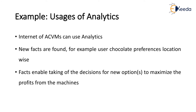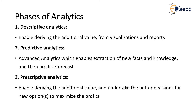For example, the Internet of Automatic Chocolate Vending Machines can use analytics. New facts are found — for example, user chocolate preference can be gathered buying location-wise. These facts enable taking decisions for new options to maximize profits from the machines. Analytics requires data to be available and accessible; it uses arithmetic, statistical, data mining, and advanced methods such as machine learning to find new parameters and information which add value to the data. Analytics also enables building models based on the selection of the right data.